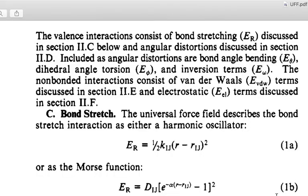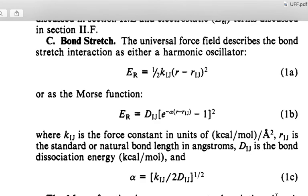We have this other equation, the Morse function, and this one is slightly different. It still contains the obvious terms: the energy, the bond length, a couple of other parameters, and an exponential. We have two exponentials here—the natural e and the square—so the shape is still going to be the same because every value that could be negative is going to be turned into a positive, and we're going to have the same harmonicity.